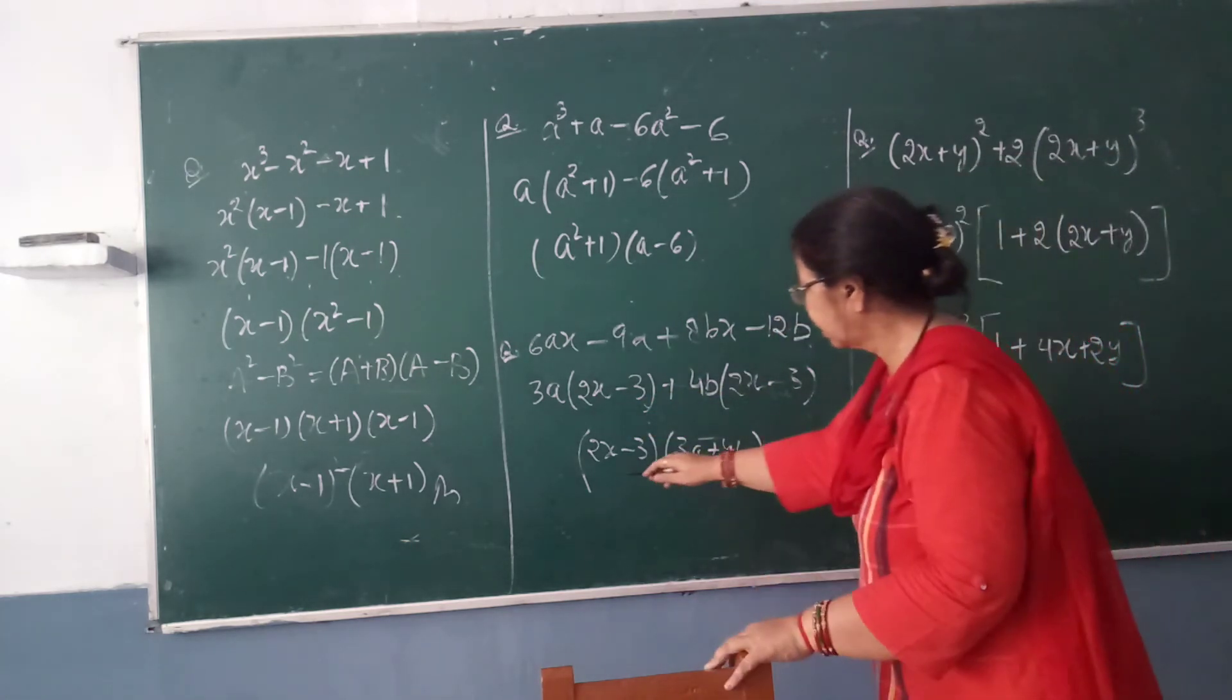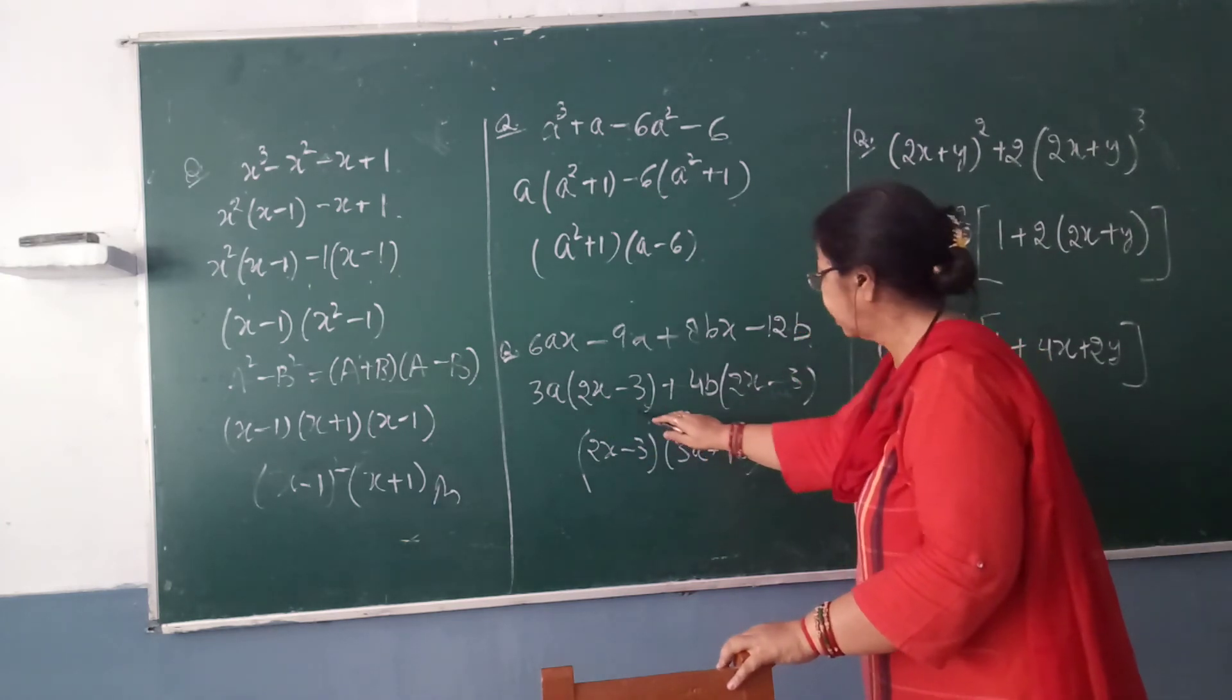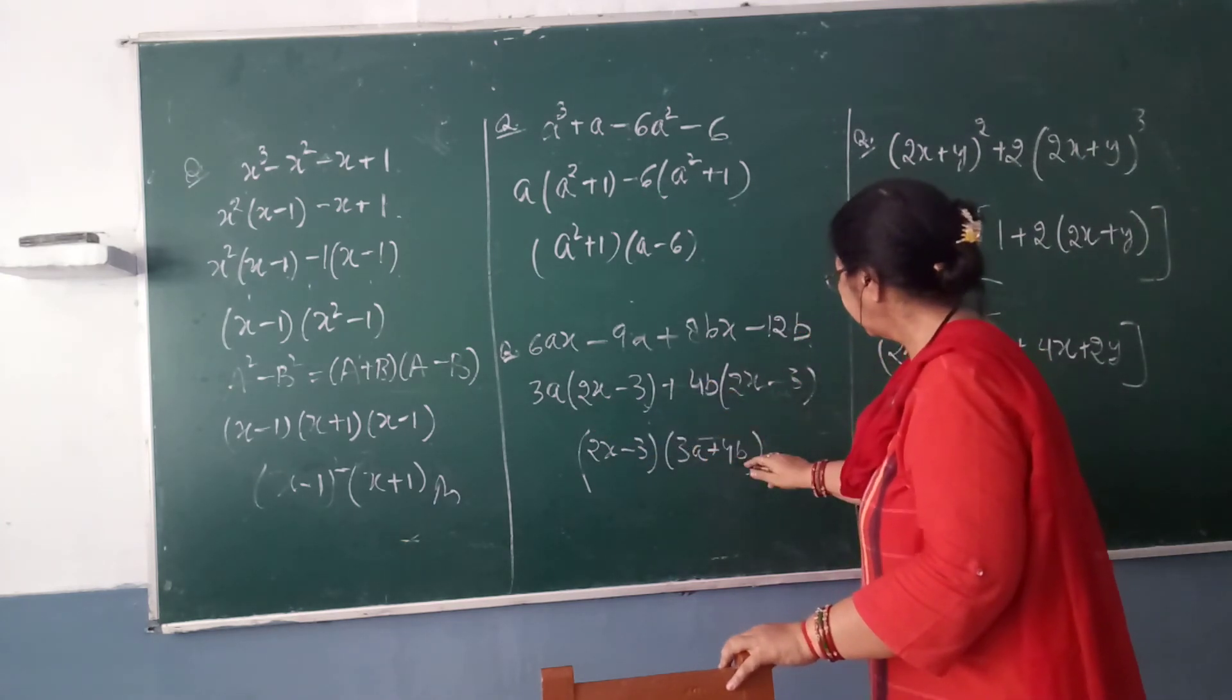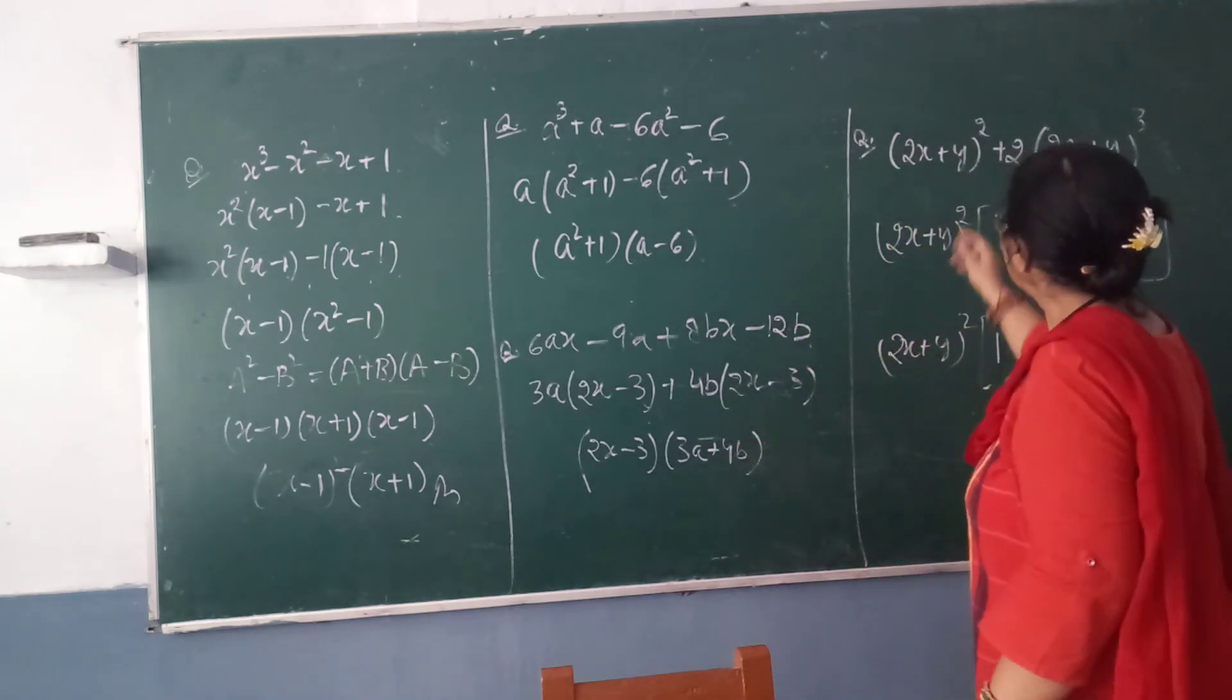Now the remaining factors we will write here in brackets. That is 3a here, plus sign is here, so we will write then 4b.